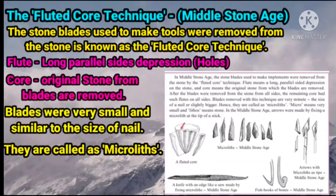By the Middle Stone Age, arrows were made by fixing microliths at the tip of a stick, as shown in the picture above and in your textbook on page 28. A knife with an edge like a saw was also made by fixing microliths, along with arrows with microliths as a tip, and fish hooks made from bones. These were the different types of weapons made using the fluted core technique.